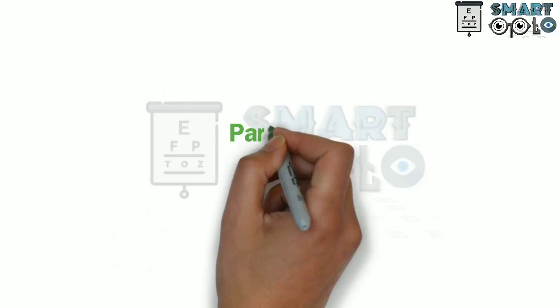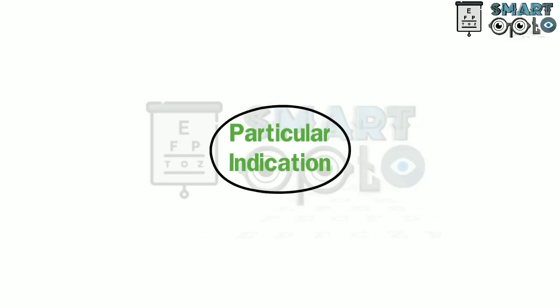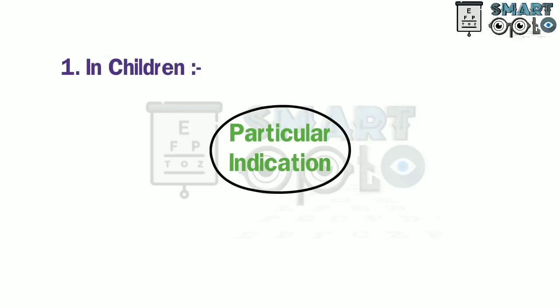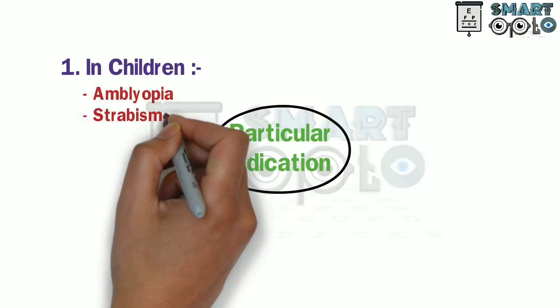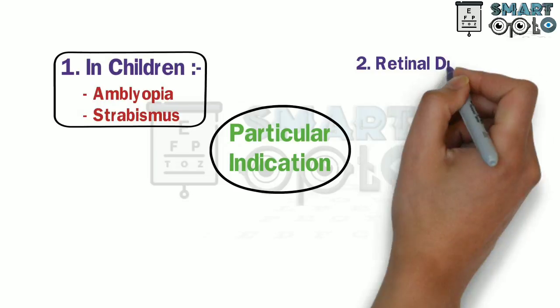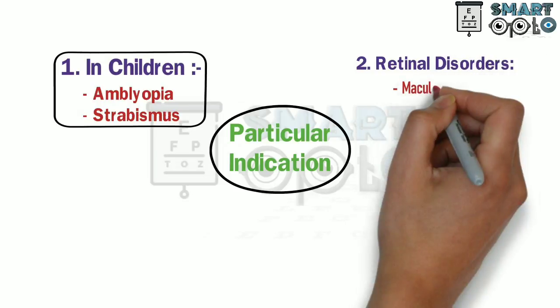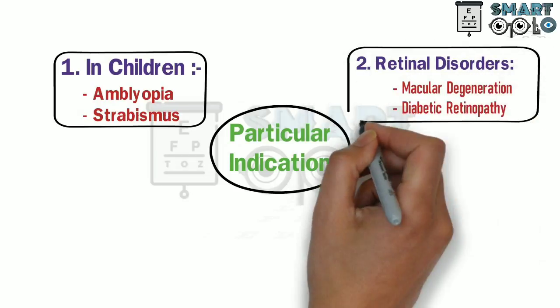What are the different indications in which the LogMAR charts are used to test visual acuity? They are used in children, particularly those having amblyopia and strabismus. LogMAR charts are also used for patients having retinal disorders such as macular degeneration and diabetic retinopathy.